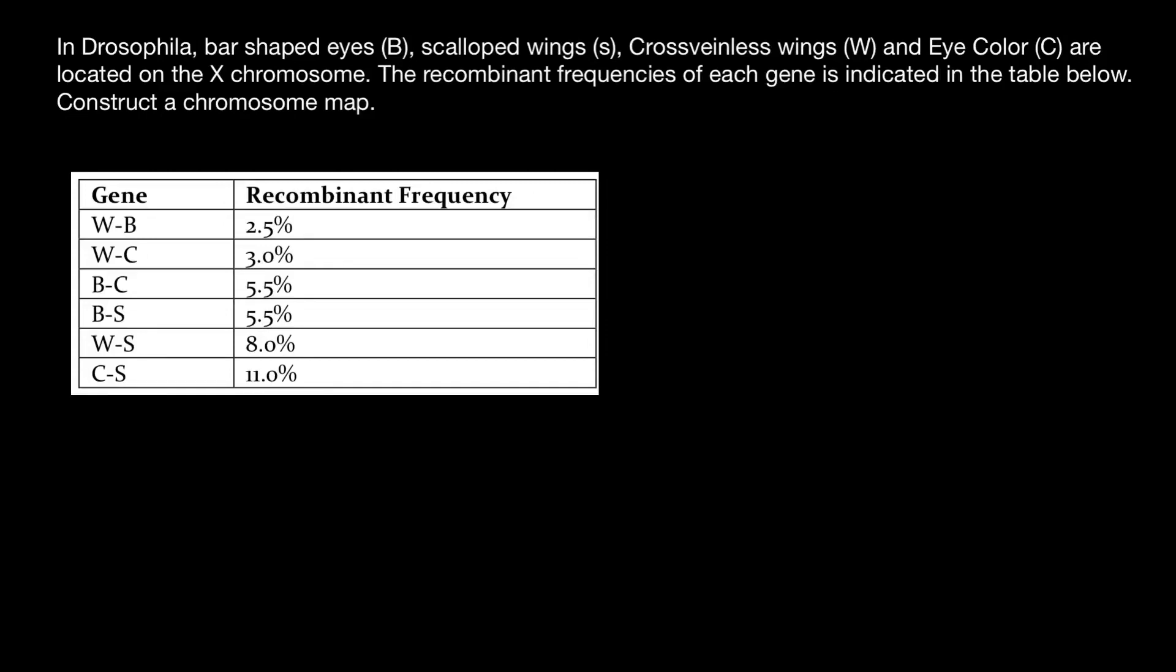Hello and welcome to Nikolai's genetics lessons. And today's problem is in Drosophila, bar-shaped eyes, scalloped wings, cross-veinless wings and eye color are located on the X chromosome. The recombinant frequencies of each gene is indicated in the table below. Construct a chromosome map.